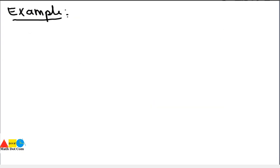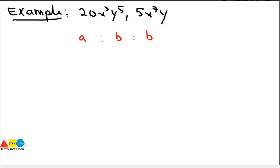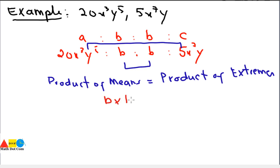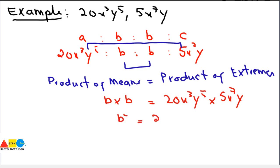Example number two: find the mean proportional of 20X³Y⁵ and 5X⁷Y. First write the standard form A ratio B proportion B ratio C, where A is 20X³Y⁵, B is unknown, and C is 5X⁷Y. Then apply the method: product of means equals product of extremes. The product of means is B times B, and the extremes are 20X³Y⁵ times 5X⁷Y.